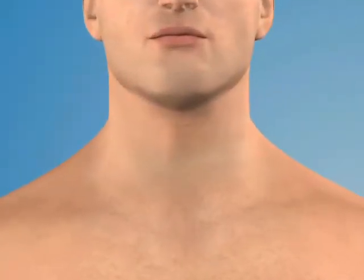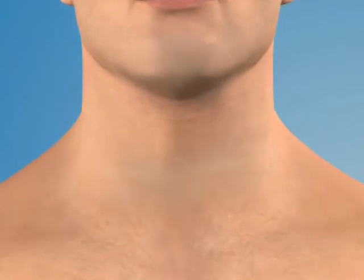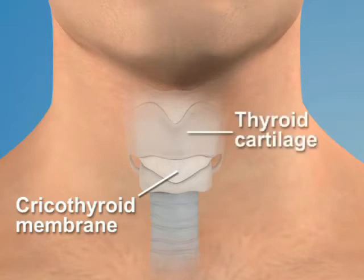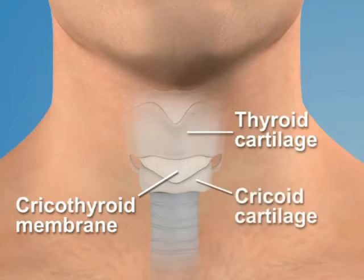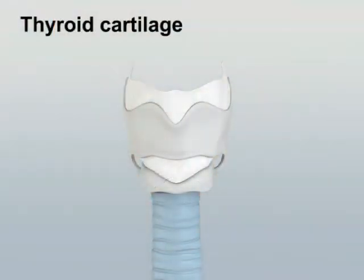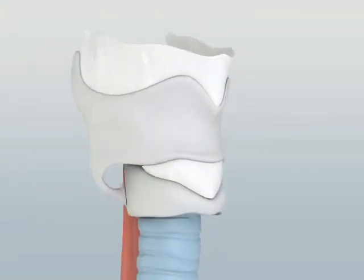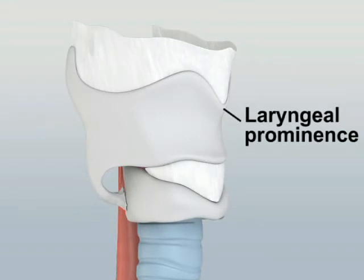The cricothyroid membrane is an elastic membrane located in the anterior midline of the neck. It is bordered superiorly by the thyroid cartilage and inferiorly by the cricoid cartilage. The thyroid cartilage consists of two lateral laminae that join at an acute angle in the midline to form the laryngeal prominence, which is more pronounced in males.